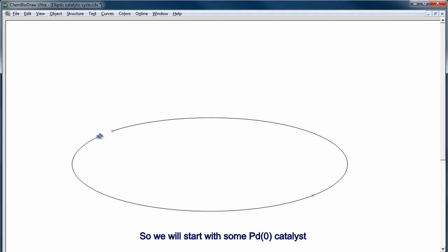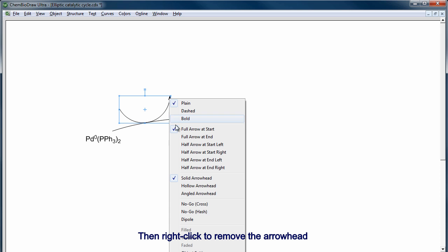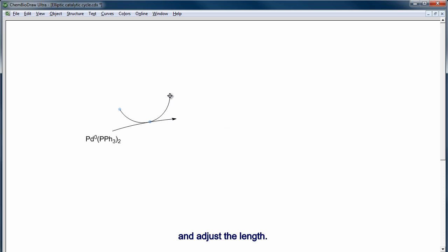So we will start with some zero-valent palladium catalyst, right here. It's F9 to make things subscript and F10 to make them superscript. I am going to add an arrow for the first reagent, I'm going to curve this arrow, position it, then right-click to remove the arrowhead and adjust the length.